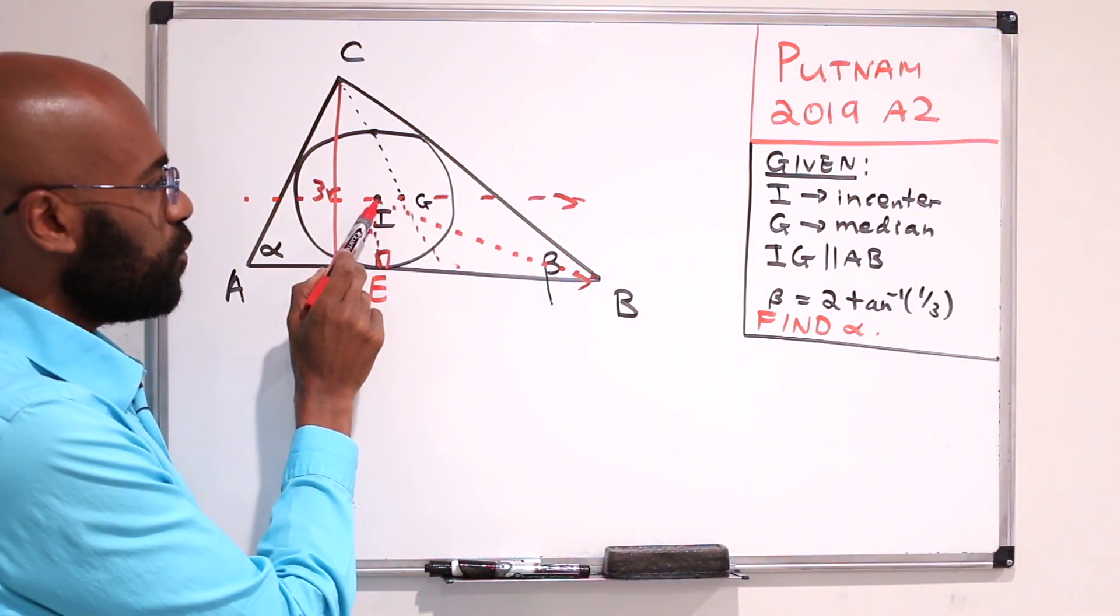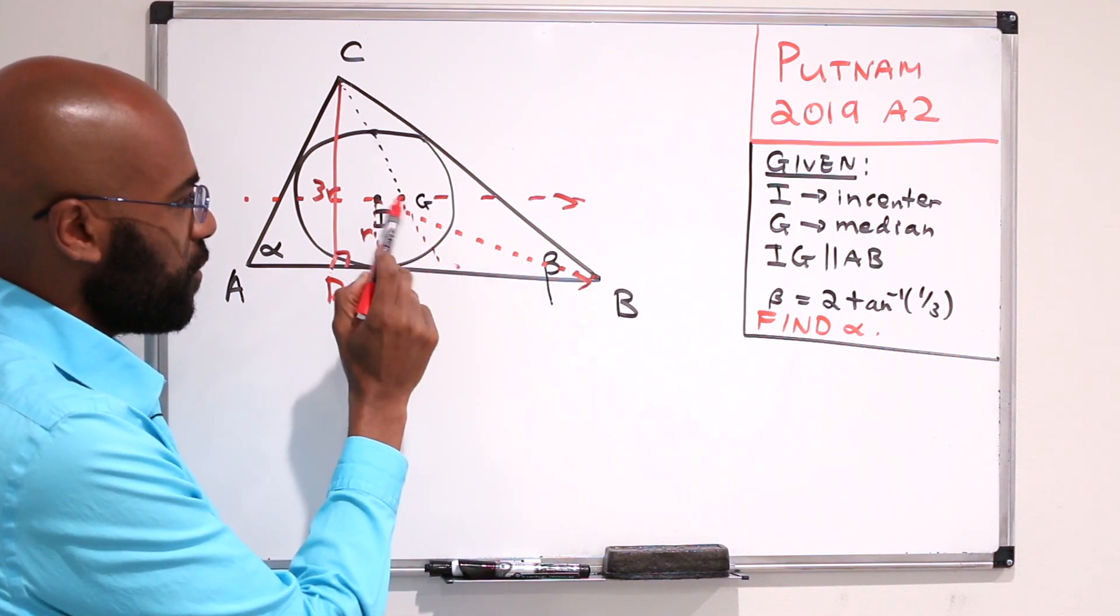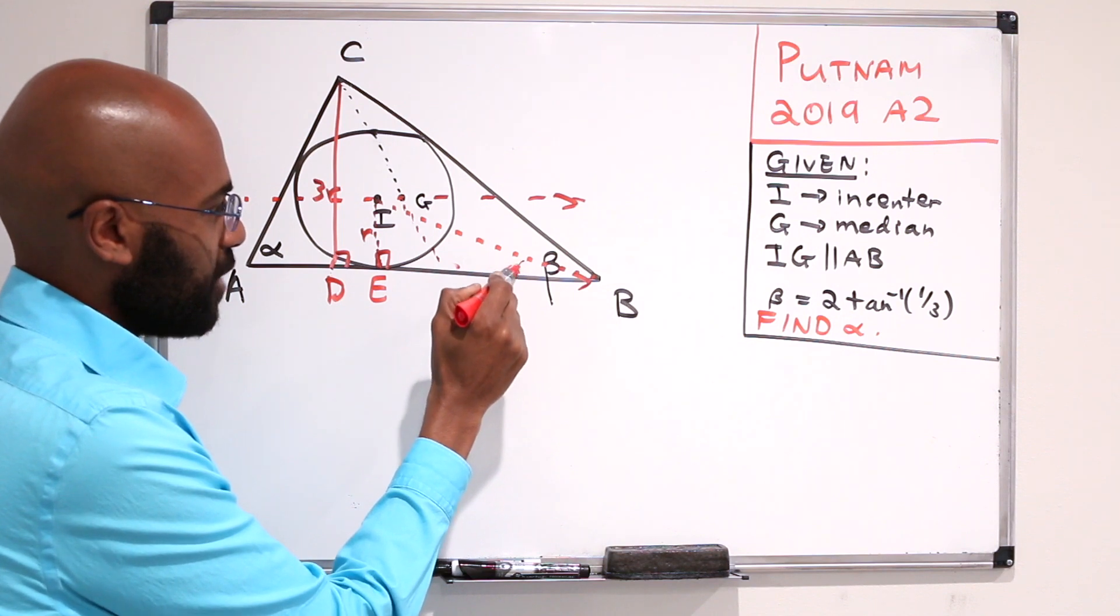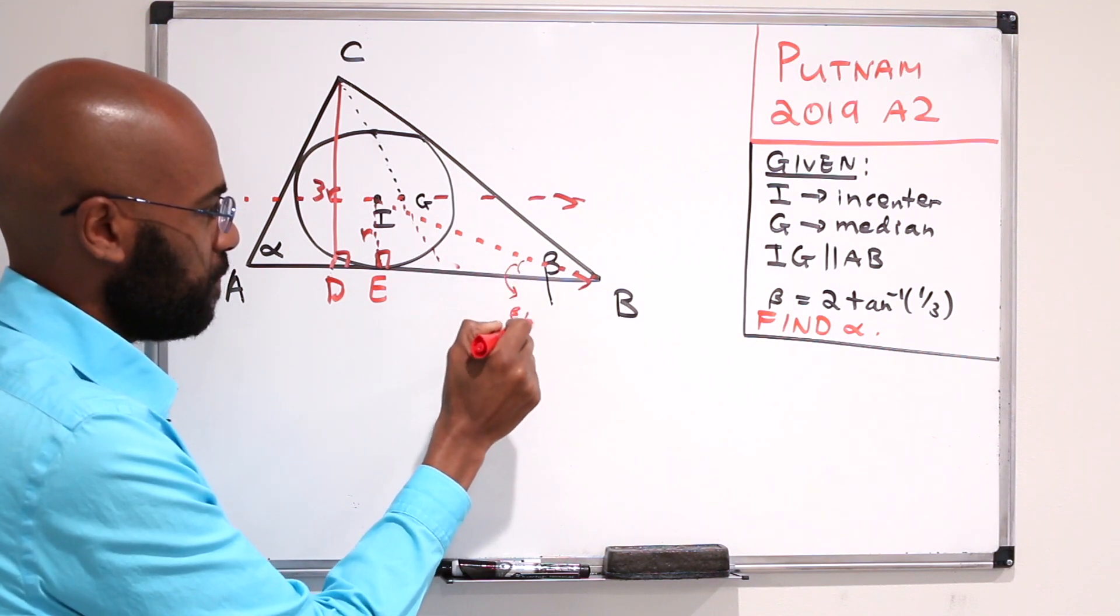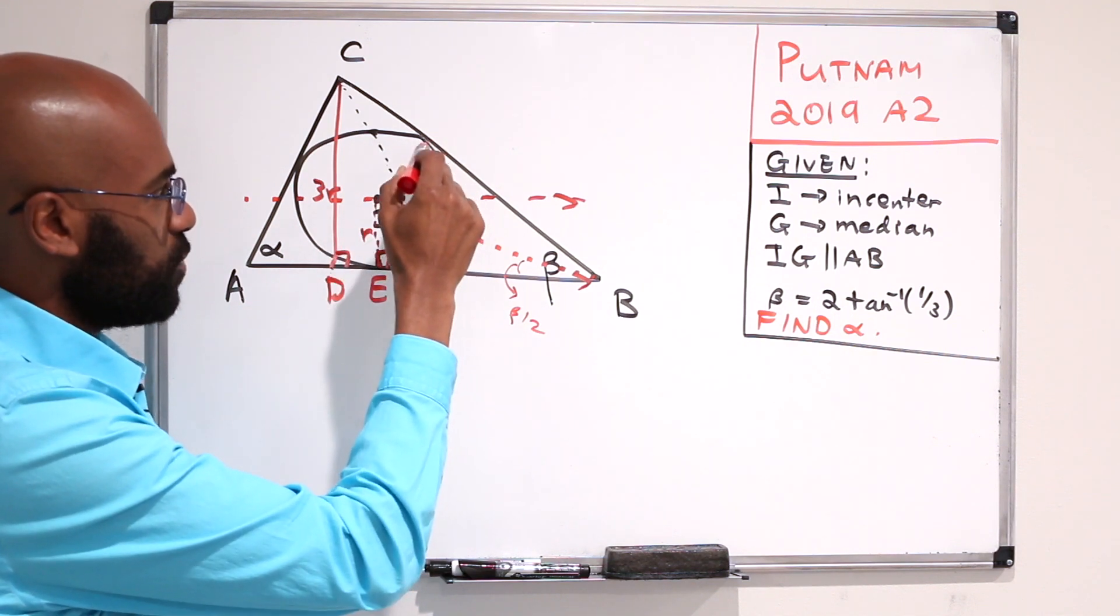So first of all, if we drew the line segment from I to B, we get this triangle right over here, and this angle here actually has to be beta over 2. A way to see this is that if we extended this out to here, we get a right angle as well.